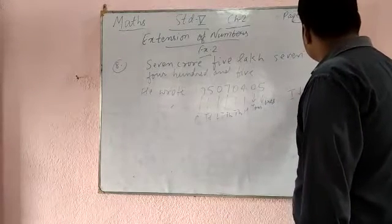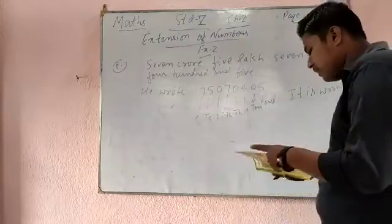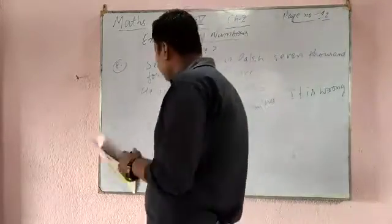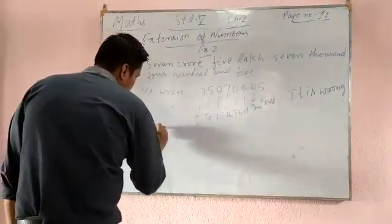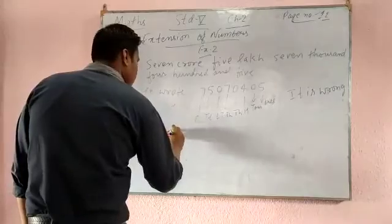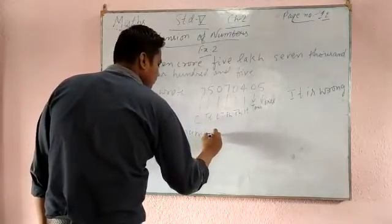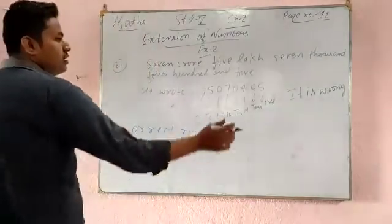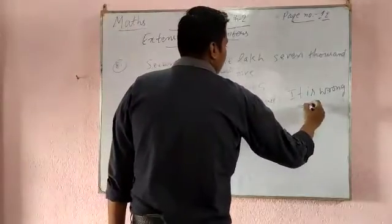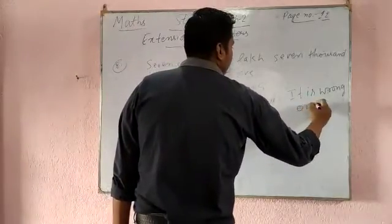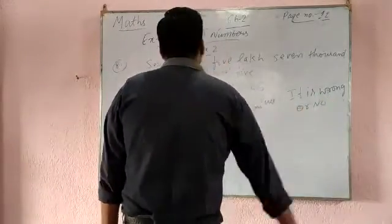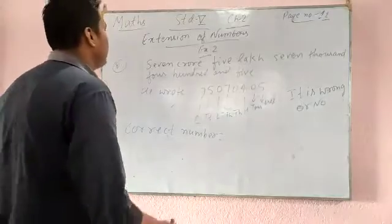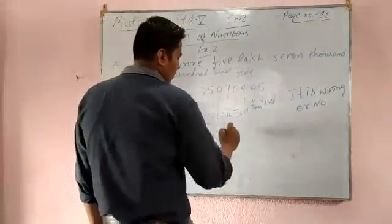So the answer is: no, it is wrong. You can write 'No'. The correct number is 7 crore 5,70,405. So it is wrong — the correct answer is 7 crore 5,70,405.